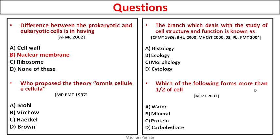Which of the following forms more than half of the cell? Water, mineral, protein, or carbohydrate? The answer is water. Water makes about 60 to 70 percent of a cell, followed by protein, then carbohydrate, and then the least amount is of minerals.